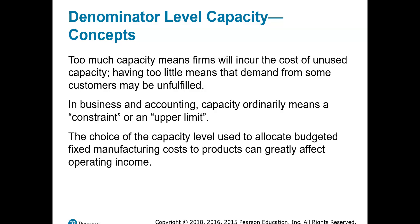If we have too little capacity, we may not be able to satisfy all customer orders. We may be consistently selling out, not being able to make enough units. So when we talk about capacity, we're talking about a constraint or upper limit. The choice of the capacity level used to allocate budgeted fixed manufacturing overhead costs will greatly affect operating income.